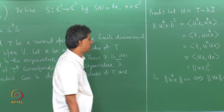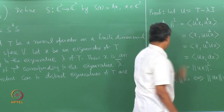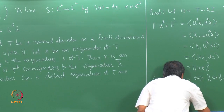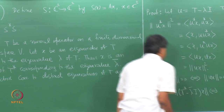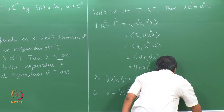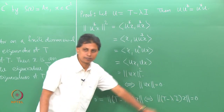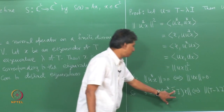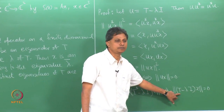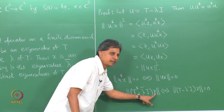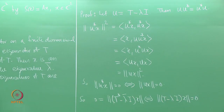Now U* = T* − λ-bar I. So ‖(T* − λ-bar I)x‖ = 0 if and only if ‖(T − λI)x‖ = 0. From this it follows that if λ is an eigenvalue and x is a corresponding eigenvector for T, then x is also an eigenvector for T* corresponding to eigenvalue λ-bar. That proves the first part.